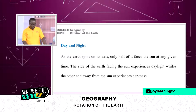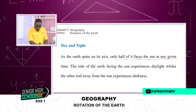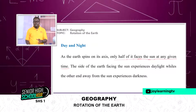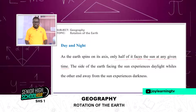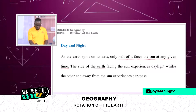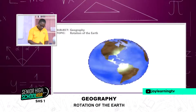Starting from day and night: as the earth spins on its axis, only half of it faces the sun at any given moment. Because the earth rotates into the sun's rays, and since the earth is an oblate spheroid—in other words, spherical—at any given point in time, it is just half of the earth that receives sunlight, and the other side experiences darkness. The side facing the sun experiences daylight, while the other end, away from the sun, experiences darkness.